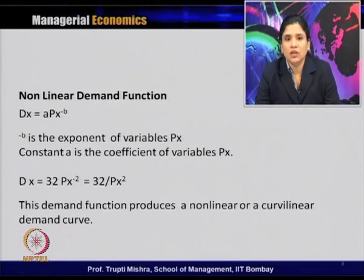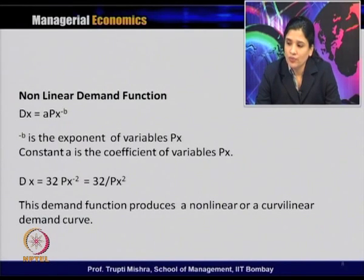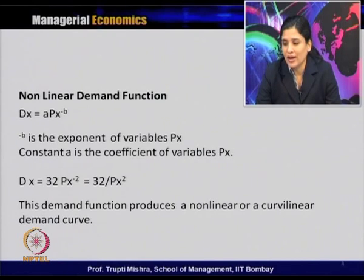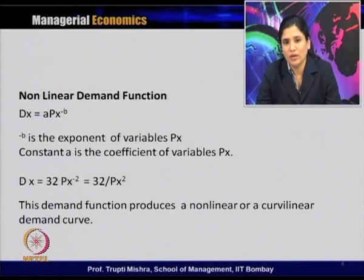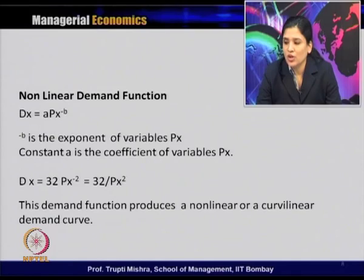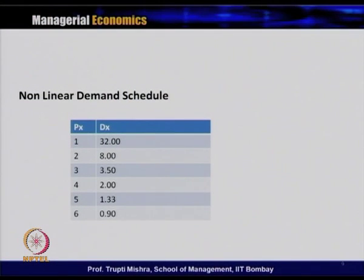Taking a non-linear demand function: D_x is a function of P_x, where P_x is the price of x and D_x is the quantity demanded. In functional form: D_x = a · P_x^(−b), where a and b are constants, and −b is the exponent of P_x. For example, D_x = 32 · P_x^(−2), or equivalently 32/P_x². This produces a non-linear or curvilinear demand curve. Consider the demand schedule: when price is 1, quantity demanded is 32; price 2, quantity 8; price 3, quantity 3.5.